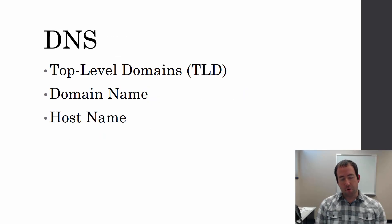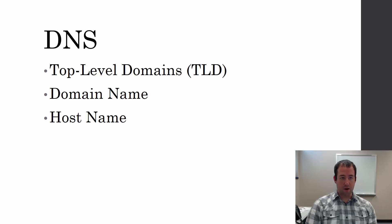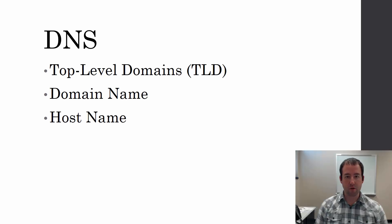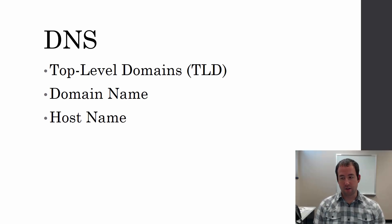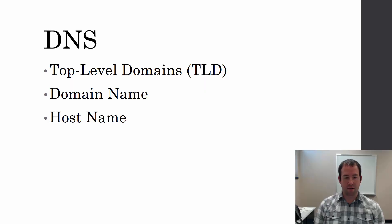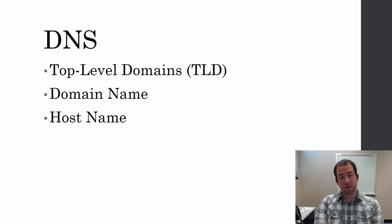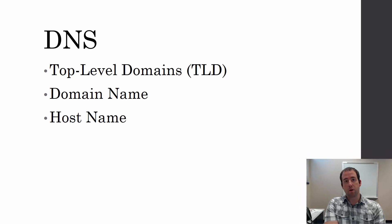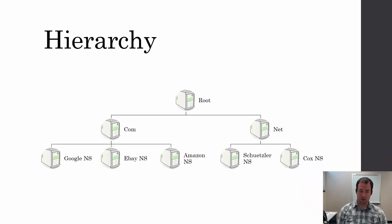A domain name in DNS consists of three parts, basically. It has the top-level domain — the TLD — then the domain name that's attached to the top-level domain, and then finally a host name specific to a certain computer connected to that domain.